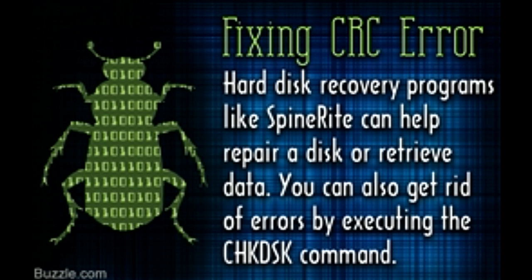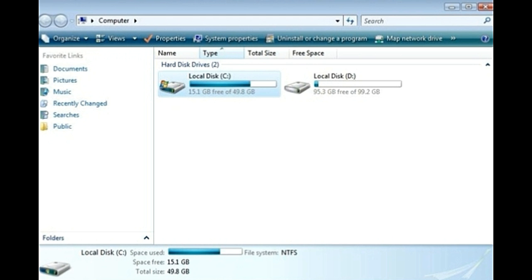Repairing the hard disk: If you are thinking of repairing the hard disk, you can run hard disk recovery programs such as Spinrite. This software program does two things. Firstly, it retrieves data from a bad sector. Secondly, it marks all the bad sectors so that data is never written on them in the future. Another option to remove errors from the hard disk is to execute the chkdsk command, which is a check disk command that identifies bad sectors and tries to restore readable information.